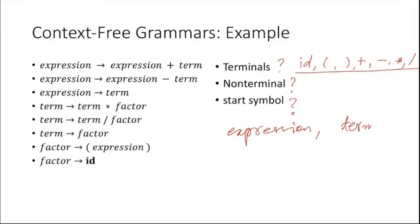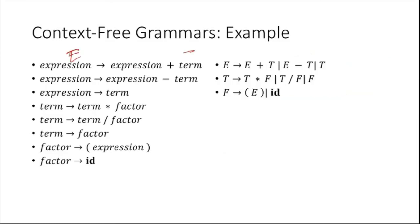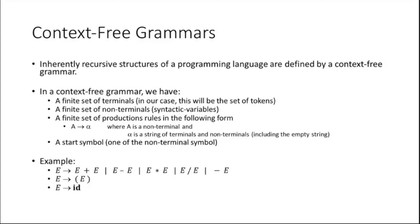Term is a non-terminal, factor is a non-terminal. I think I can see only these three non-terminals. Then what is the start symbol here? The start symbol is 'expression.' This is the representative grammar, and the same grammar is often written in shorthand — expressions as E, terms as T, and factors as F.